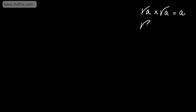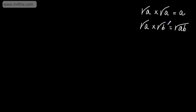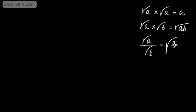If we have the root of A multiplied by the root of B, this gives us the root of A multiplied by B, which we can write as the root of AB. We can also use this property in reverse. When looking at division, if we have the root of A divided by the root of B, we can write this as the root of A divided by B.